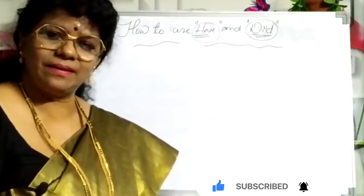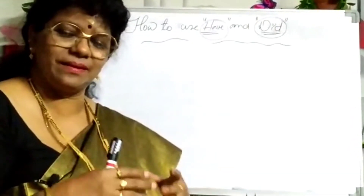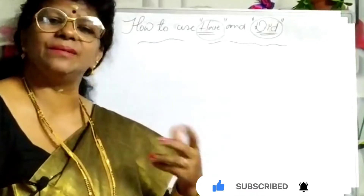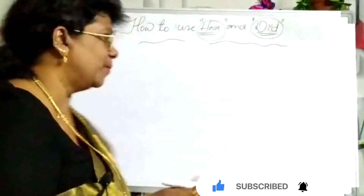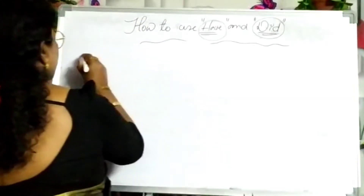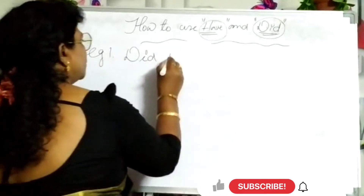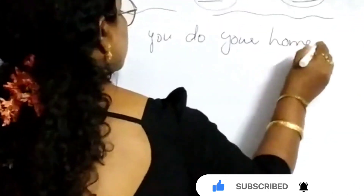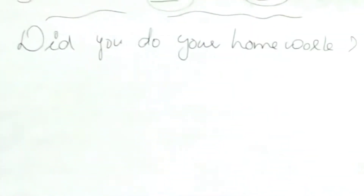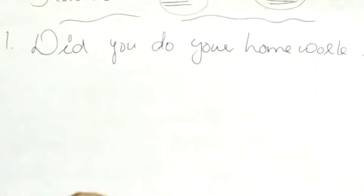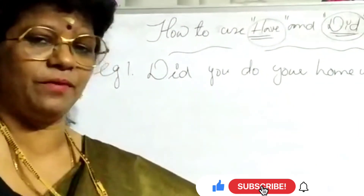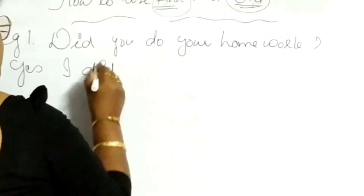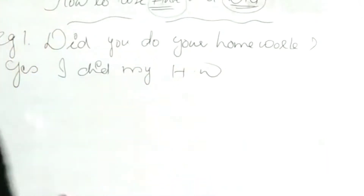In certain situations and circumstances, how can we use 'have' and 'did' and how can we get similar meanings? For example: 'Did you do your homework?' If someone asks you that question, what answer do you have to give?